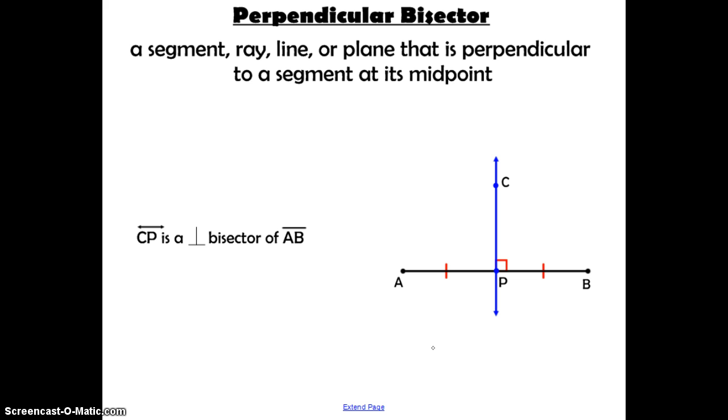A perpendicular bisector is a segment, ray, line, or plane that is perpendicular to another segment at its midpoint. We have P, the midpoint of segment AB, because it cuts it into two equal segments, AP and PB.